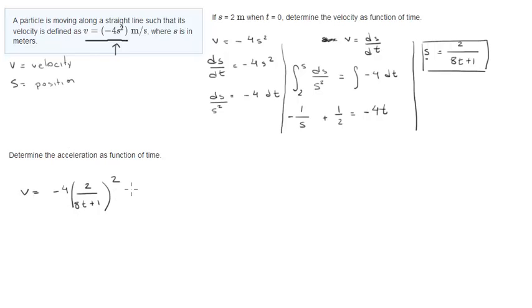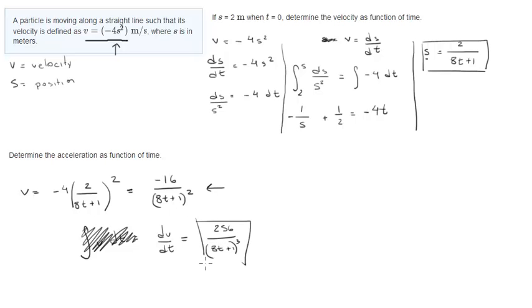And when you solve this, you're gonna get negative 16 over (8t plus 1) all squared. When you integrate over time you get the acceleration - I'm sorry, not when you integrate, when you derivate dv/dt. So when you derivate this you're gonna get 256 over (8t plus 1) all that cubed, and that is the final answer.